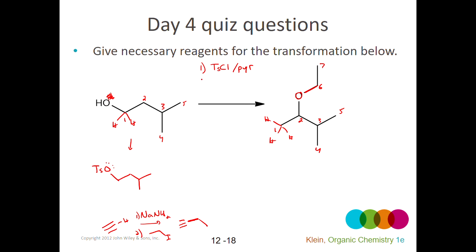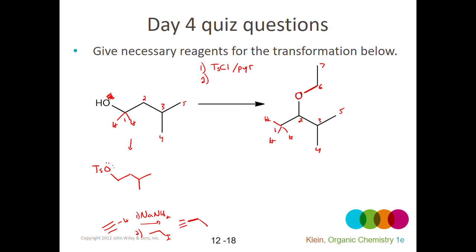What I would need next is a base — ethoxide, methoxide, tert-butoxide — it doesn't really matter. Since the leaving group is on the end of the chain, there's only one beta carbon. Once one of these hydrogens on the beta carbon rotates into a position anti-periplanar to the leaving group, any strong alkoxide base can pick off that proton, swing in, and push out the leaving group. The next intermediate would be the alkene that results from that elimination.